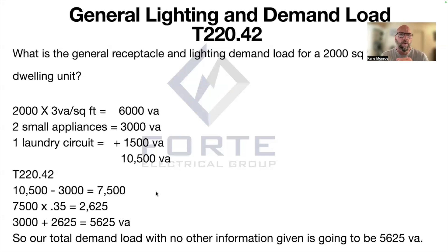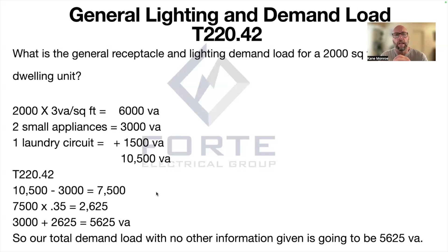Now there are other steps beyond that to get the complete load of the house. We'll have to account for the electric range, the dryer, and some other small appliances. And if we have four or more appliances, we can apply a 75 percent factor — but that's further on in the process.